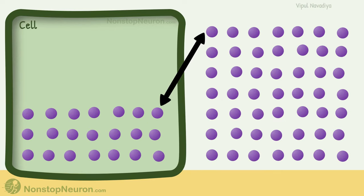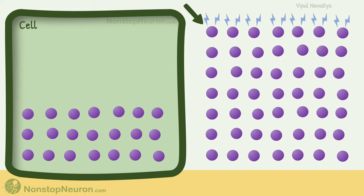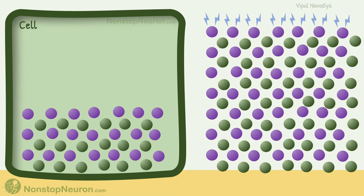This transport establishes a concentration gradient for sodium ions. It's like these ions are at the top of the hill with stored energy, and this energy can be secondarily used to move other ions uphill — for example, calcium.